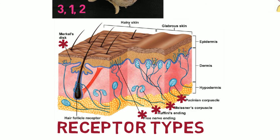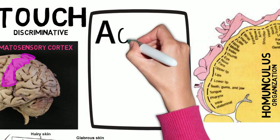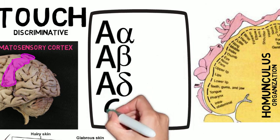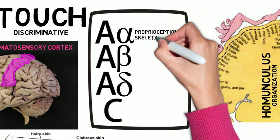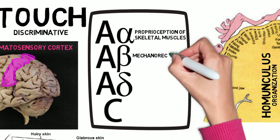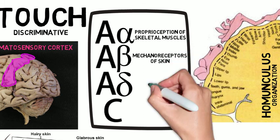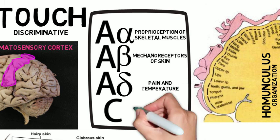Somatosensory information is transmitted by specialized fibers called Aα, Aβ, Aδ, and C fibers. Aα are large myelinated fibers that transmit proprioceptive information from skeletal muscles. Aβ are medium myelinated fibers that transmit mechanoreceptive information from skin. Aδ are small myelinated fibers that transmit information about pain and temperature. C fibers are small unmyelinated fibers that transmit information about pain, temperature, and itch.